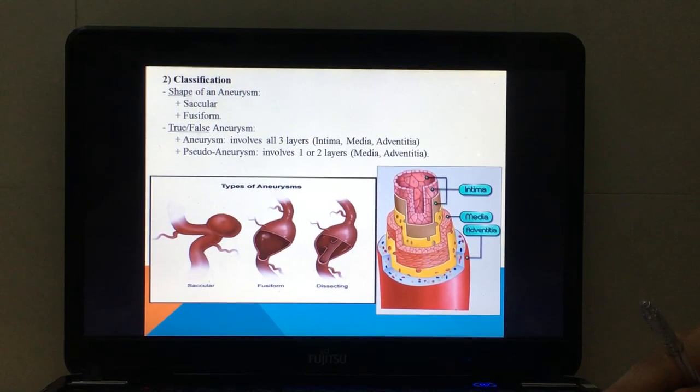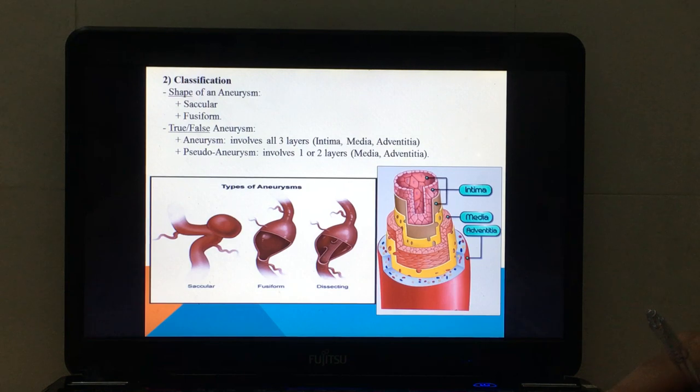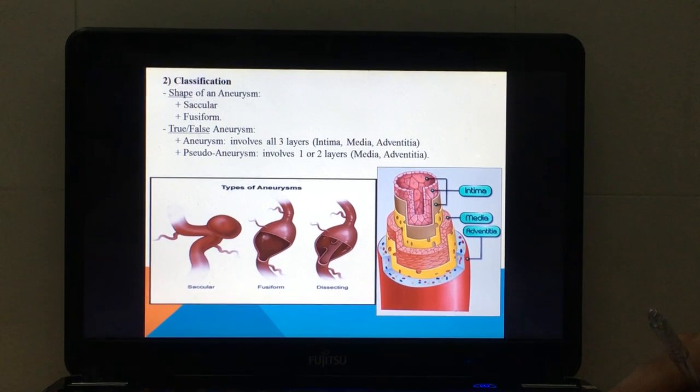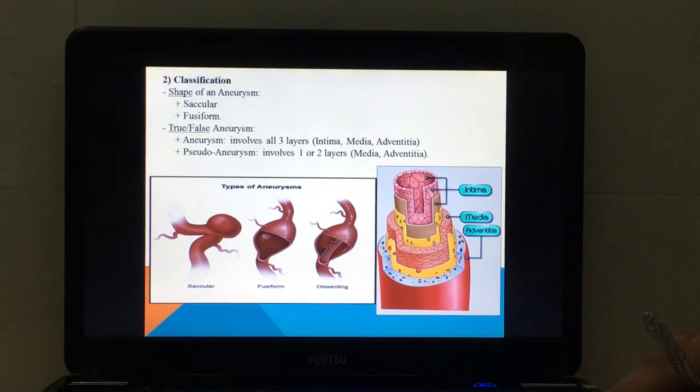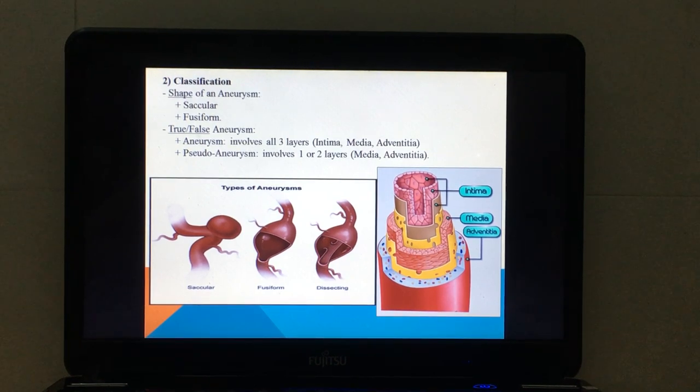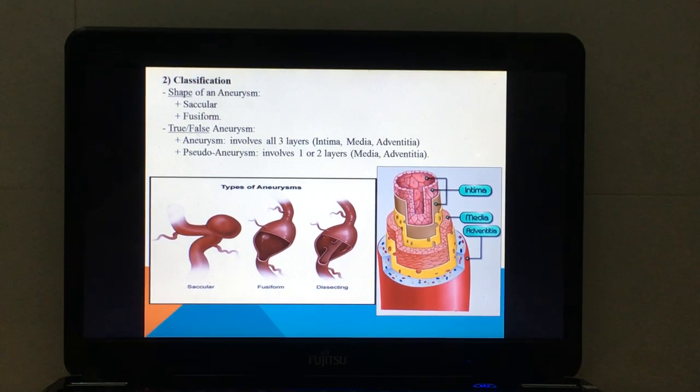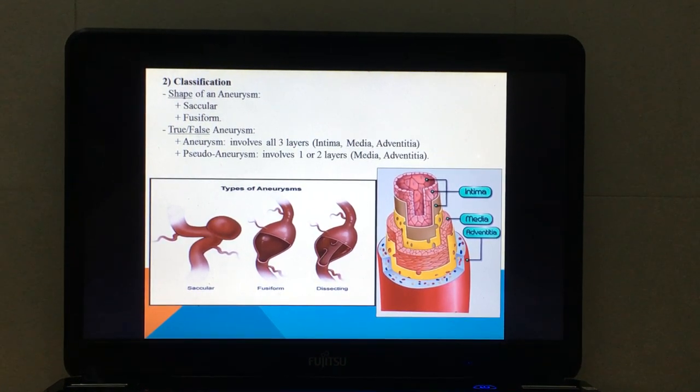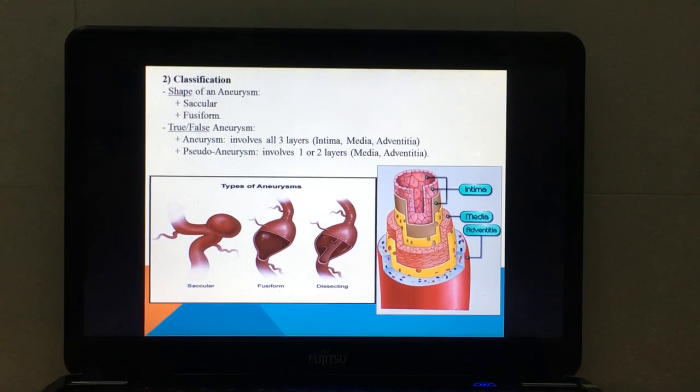A real aneurysm involves all three layers: the intima, the media, and adventitia. But the pseudoaneurysm just involves one or two layers, the media or the adventitia, or both of them.